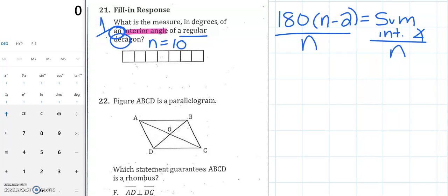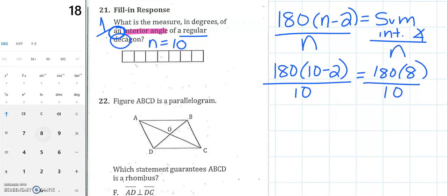So to get just one, we're going to do 180(n-2) divided by n. So I'm going to plug in 180 times 10 minus 2 divided by 10. In this case, 180, simplifying the parentheses, times 8 divided by 10. In my calculator, 180 times 8 is 1440 divided by 10, and I'm going to get 144 degrees for just one interior angle, and that's my answer. Next question.